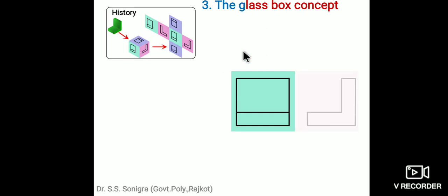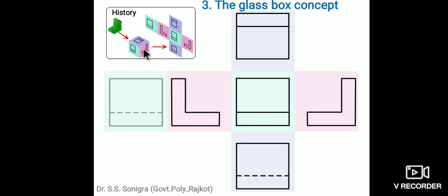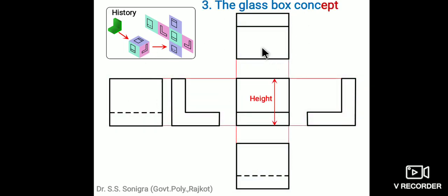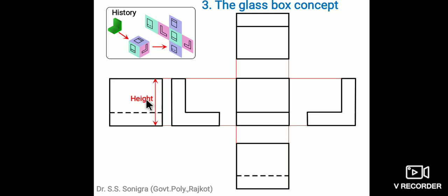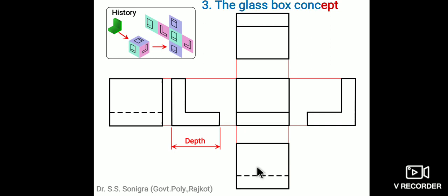For this object, we open the right side, left side, top side, bottom side, and rear side. The rear means if we are looking from the back. Height remains the same in the front view, two side views, and rear view. Width remains the same in the front view, top view, and bottom view. Similarly, the depth of the top view and bottom view equals the width of the two side views — this remains the same for any object.